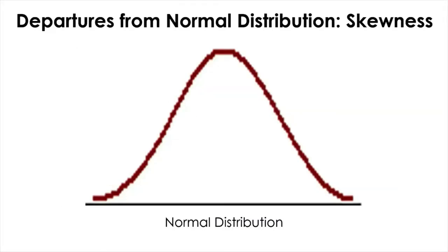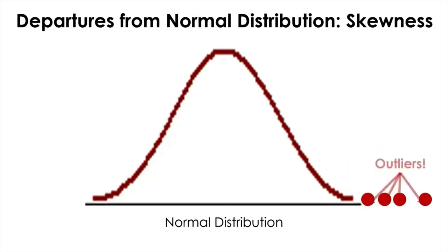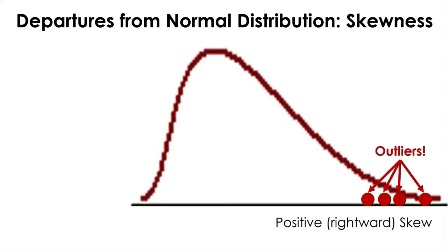Because normal distribution is such an important distribution, people came up with some technical terms to describe distributions breaking the properties of normal distribution. For example, we say a distribution is skewed to the left or right when the symmetry from the center is broken. This typically happens when there are outliers in the dataset. And especially when the outliers are on the right of the distribution, then this distribution has a positive skew or is said to be skewed to the right.